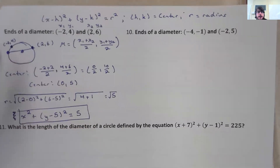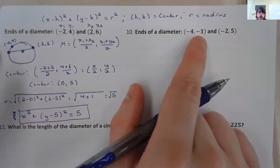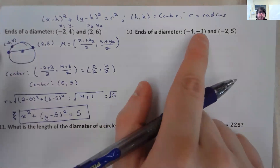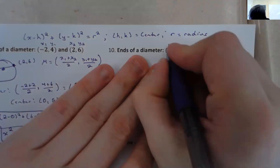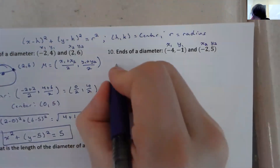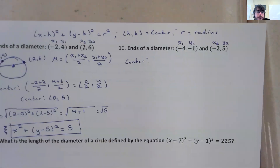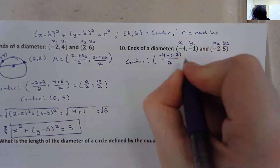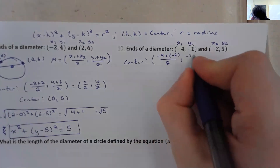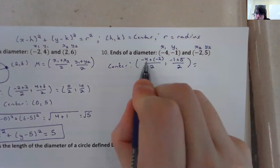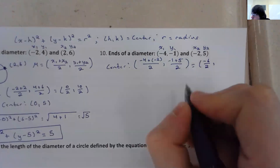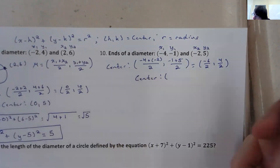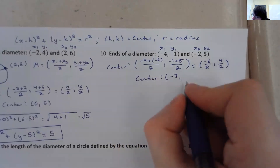Let's look at number 10 — it's the same type of problem. The ends of a diameter are negative 4, negative 1 and negative 2, 5. To find the center, we find the midpoint of the diameter. Label x1, y1, x2, y2, and apply the midpoint formula. Negative 4 plus negative 2 over 2 gives negative 6 over 2; negative 1 plus 5 gives 4 over 2. Simplifying: negative 3 and positive 2. So our center is negative 3, 2.